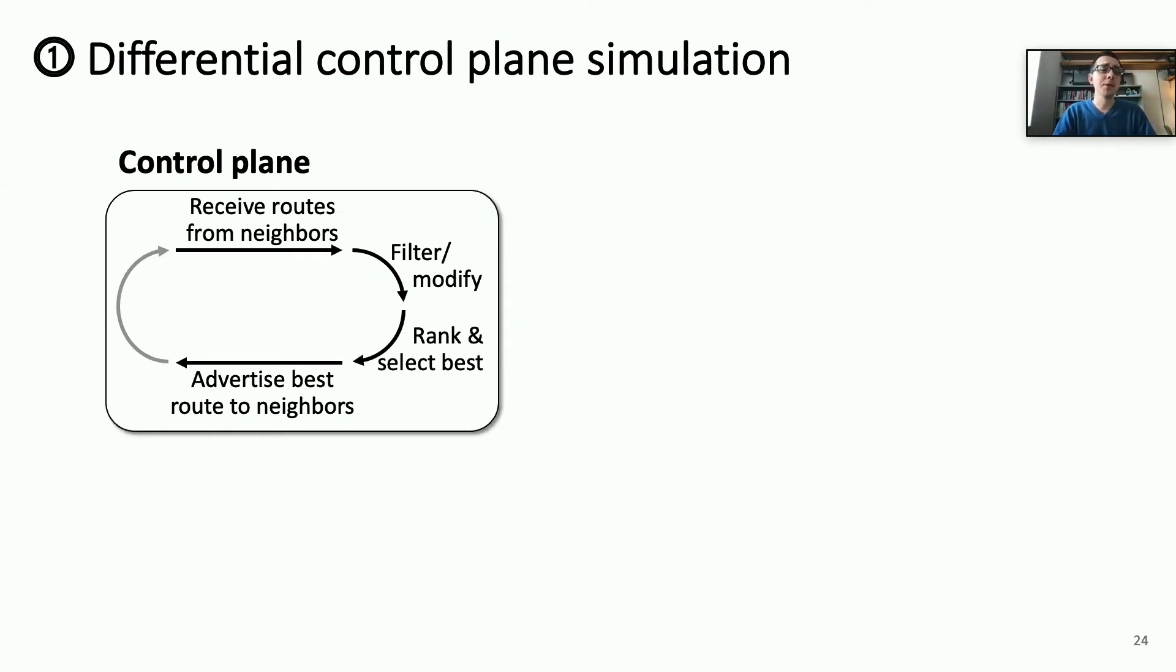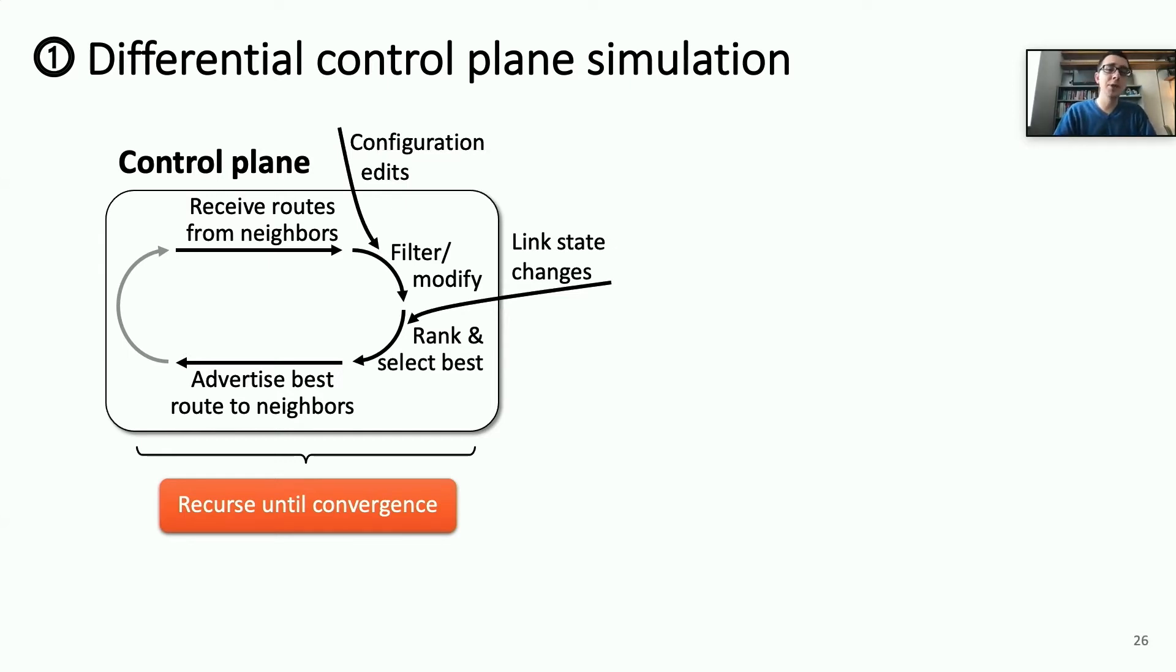We look at a control plane's operation. We observe that a control plane repetitively receives, filters, ranks, and advertises routes, and so this is a recursive process that continues until routing normally converges. If we see a change in configurations, this is going to trigger changes in the routes that the control plane is going to filter or the way those routes are modified. If there's a change in link states, that may cause some routes to no longer be available and different best routes to be selected. And whenever these changes in control plane inputs happen, the control plane is going to incrementally update its routes, and any routes that are not affected by configuration edits or these link state changes won't change in any way.